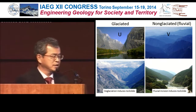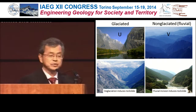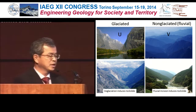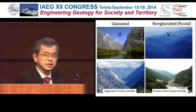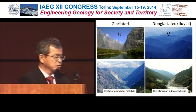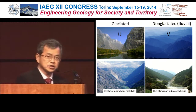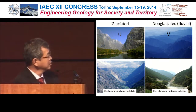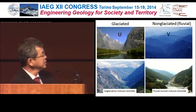Let me compare the valley in a glaciated area and a non-glaciated, fluvial area. A glaciated valley has a U-shaped steep slope and a wide valley bottom. A fluvial valley is V-shaped with a very narrow valley bottom. On the shoulder of a glaciated slope, slope instability and landslides are induced by deglaciation and debuttressing. In a fluvial valley, landslides are also induced. But there should be some difference between a glaciated valley and a fluvial valley.